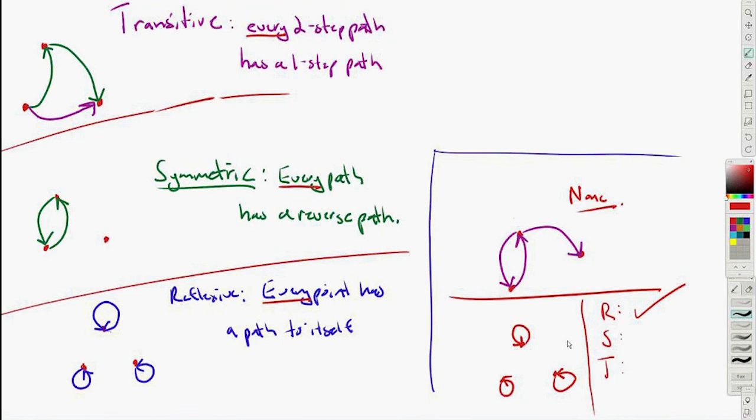And likewise, in the transitive case, it has no two-step paths that require a one-step path. So this actually is symmetric and it actually is transitive in a really vacuous way, because the condition is: if there's a path out then there's a path back, but there are no paths out, so there doesn't need to be any paths back.